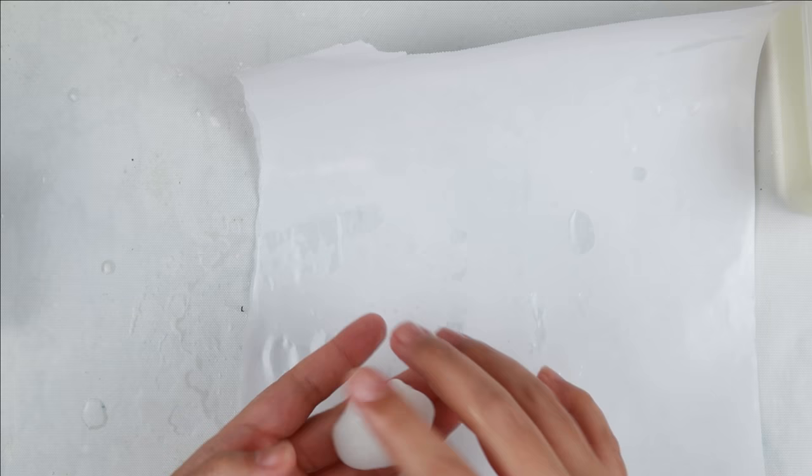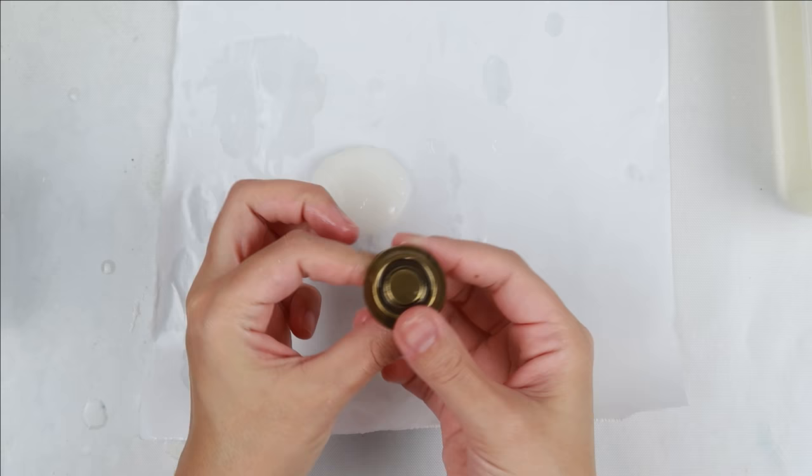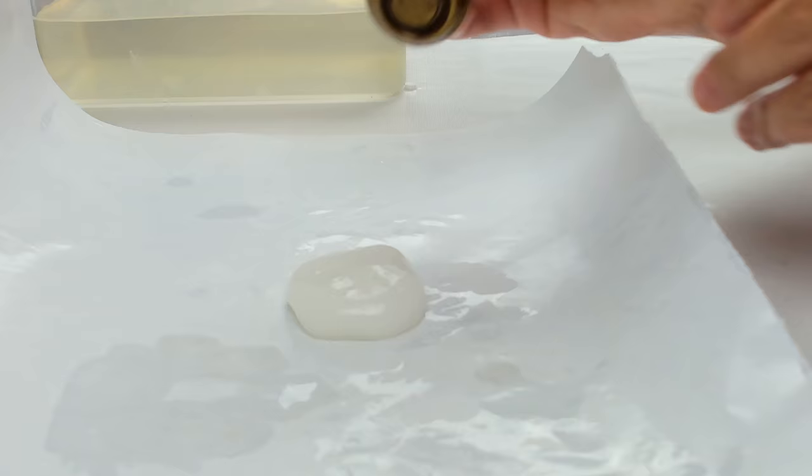When my silicone was ready, I laid down some freezer paper. The freezer paper has a wax on one side which helps the silicone not stick to it. Then you are going to take a little bit of water and pat it down to the shape that you want. The silicone needs to be fairly thick because you are going to add a dimensional item to it to make the mold.